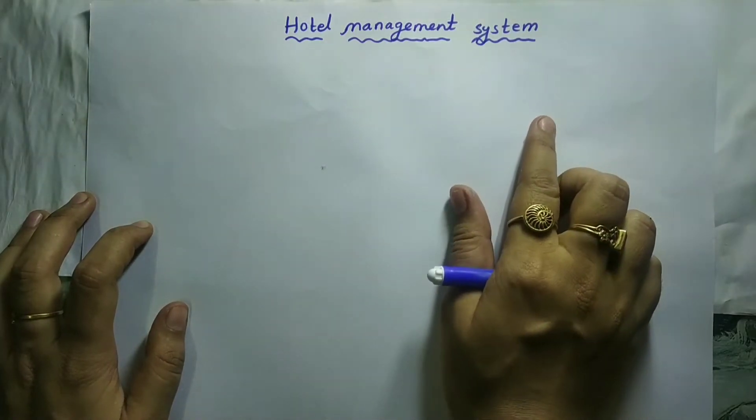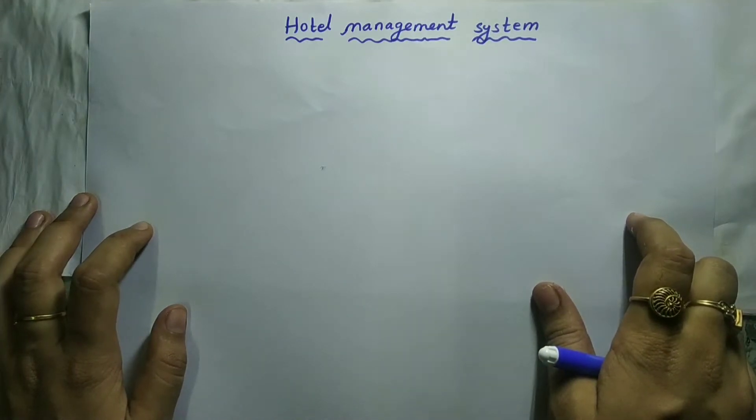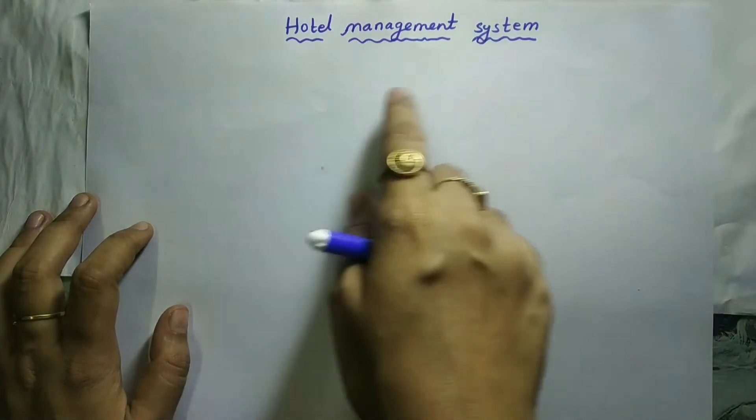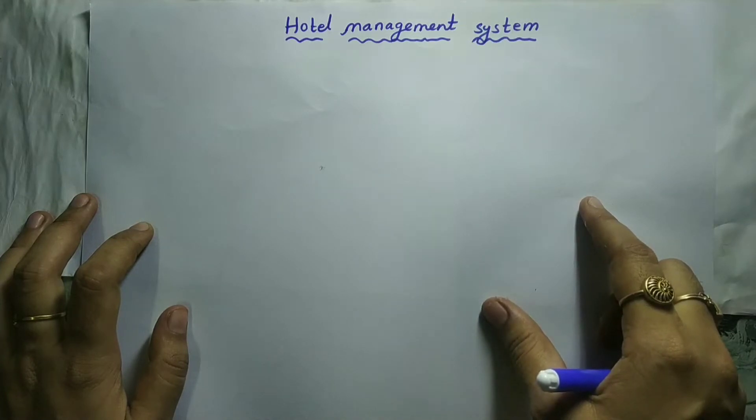The first step is we need to choose the entities. So what is an entity? Entity is an object with physical existence or conceptual existence. So in this hotel management system, hotel is an entity. Hotel is physically existing, therefore it is an entity.